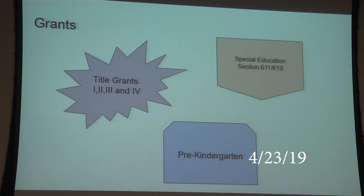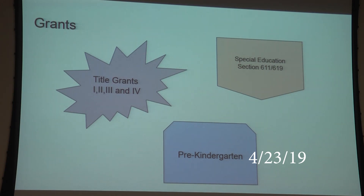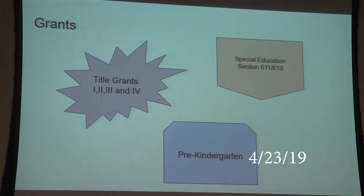Grants don't affect the budget that goes to public vote, but they are revenue sources. We receive Title I, II, III, and IV grants totaling over a million dollars. Special education grants — 611 and 619 — help pay for some costs. Our pre-kindergarten revenue stayed at $373,000 for about five or six years, so the school district has increased its own portion every year to keep the pre-k program running.